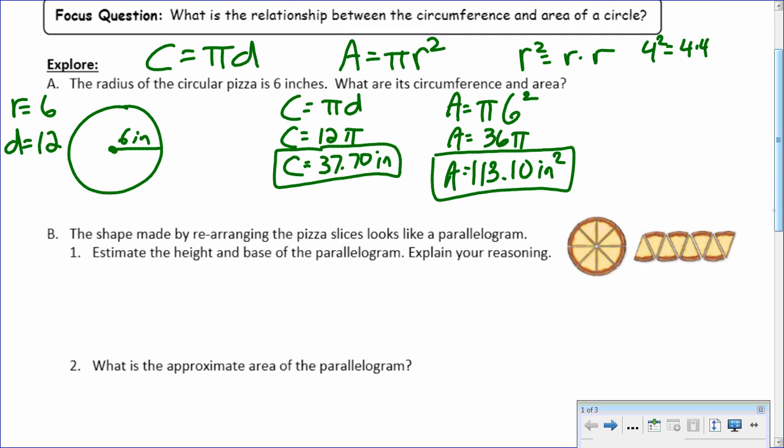All right. So the shape made by rearranging pizza slices looks like a parallelogram. You kind of see it here? Yes. All right. Estimate the height and base of the parallelogram and explain your reasoning. So what do you think, how do you think we could find that out? Aiden. For height, I think the radius is 6. So it's like the height of 6. Perfect. Right. Because remember, the radius is from the center to the edge here. So each slice, if you stand it up, it's about 6 inches, right?